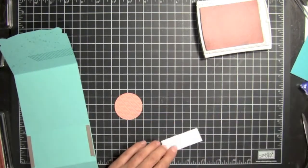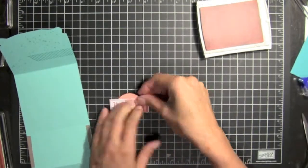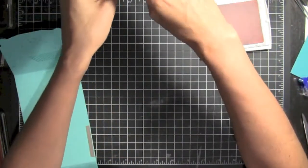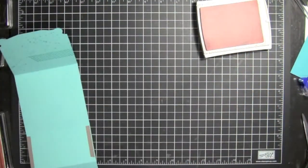And we're going to adhere that piece right here. And then we'll adhere this to this. And then I've got some dimensionals on it already. So I'll remove the backing.